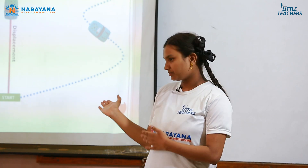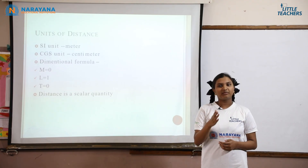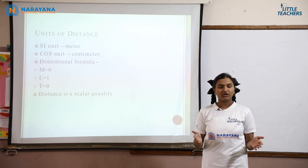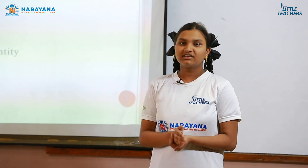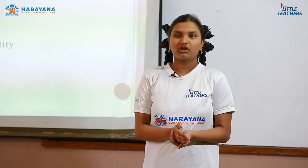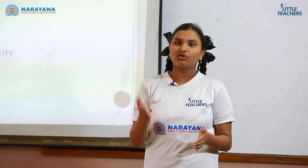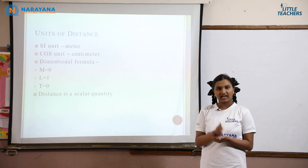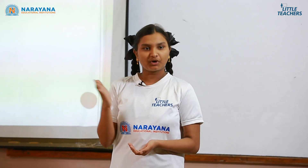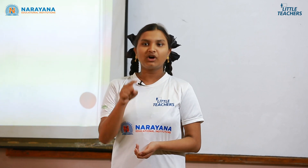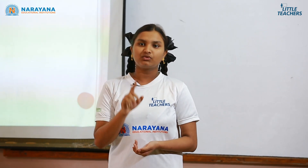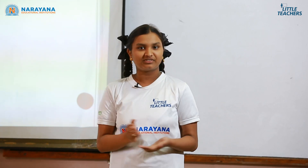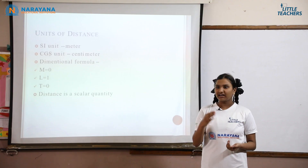The SI unit of distance is meter and the CGS unit of distance is centimeter, because distance is measured in units of length. Distance is a scalar quantity — as we know, a scalar quantity takes only magnitude into consideration and doesn't take direction. So distance is a scalar quantity. The dimensional formula for distance is M⁰ L¹ T⁰, because meter is the unit of length, so we get the power of L¹.